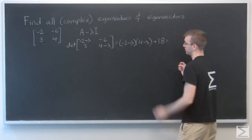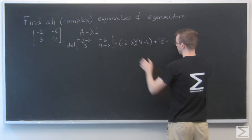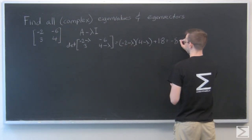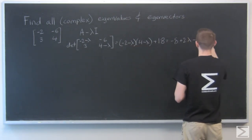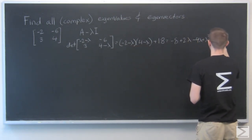And that is equal, we're going to FOIL this out, minus 2 times 4 minus 8, minus 2 times minus lambda is positive 2 lambda, that's minus 4 lambda, plus lambda squared, and plus 18.